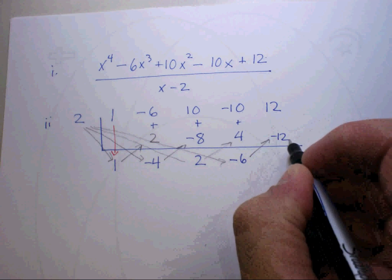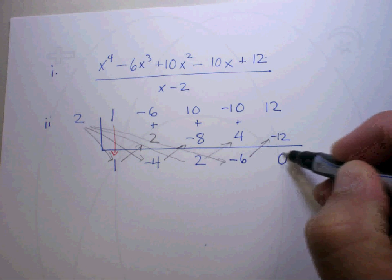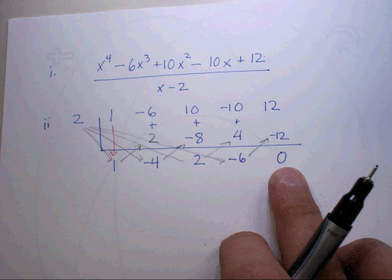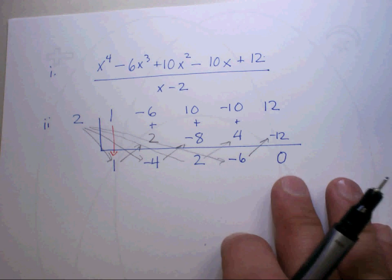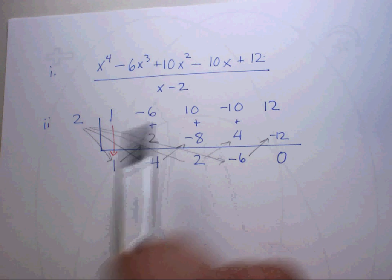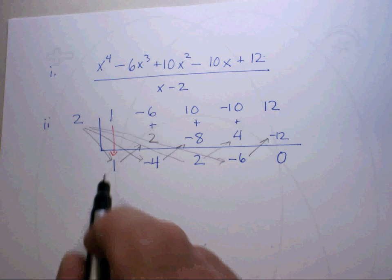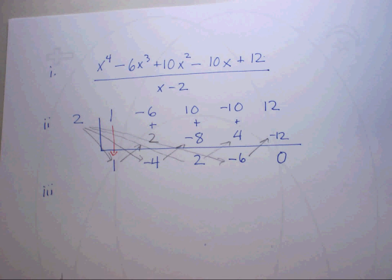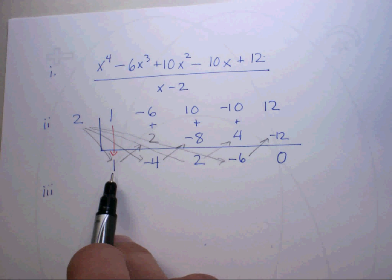Try it one more time. 2 times negative 6 gives you negative 12. When you add those two, you're going to get 0. That's going to work out great because that means that this number came out evenly. That divided by that came out evenly.